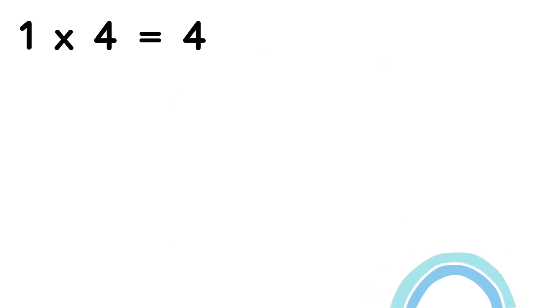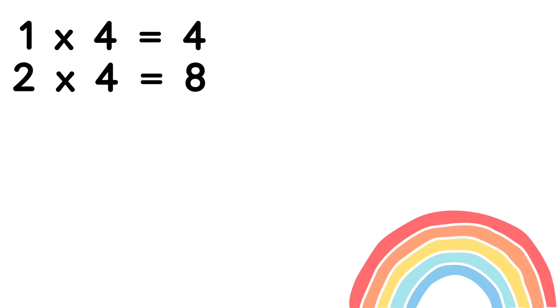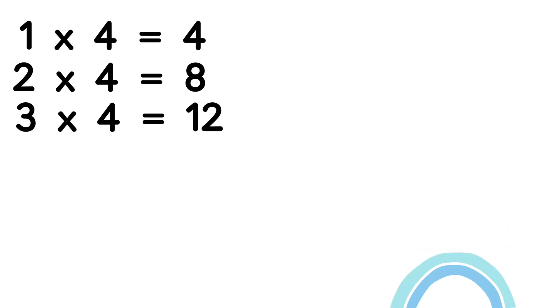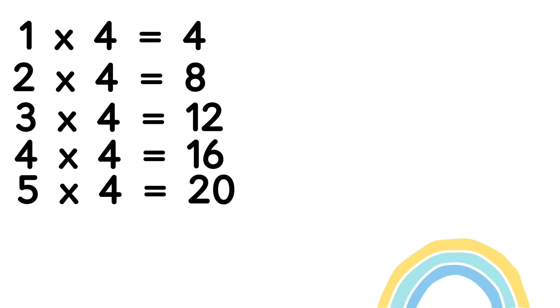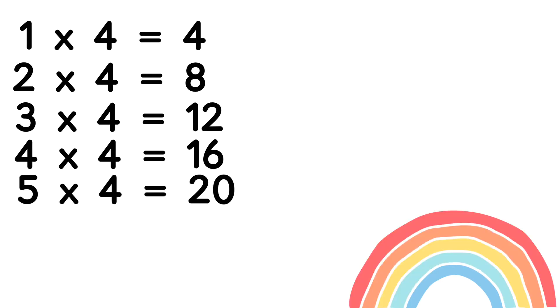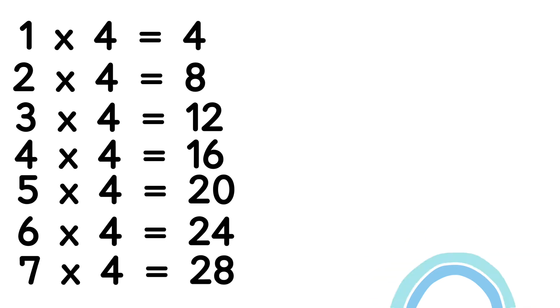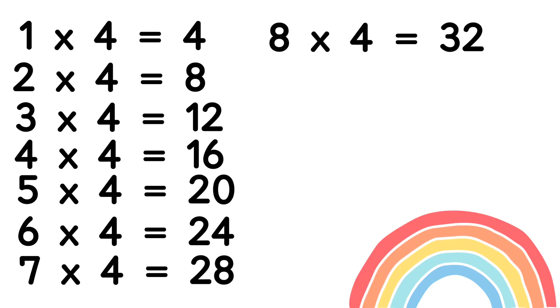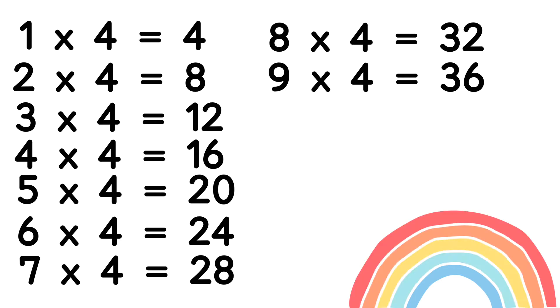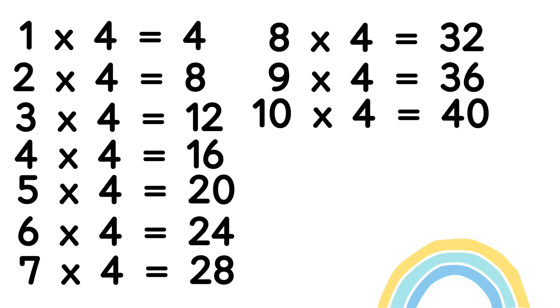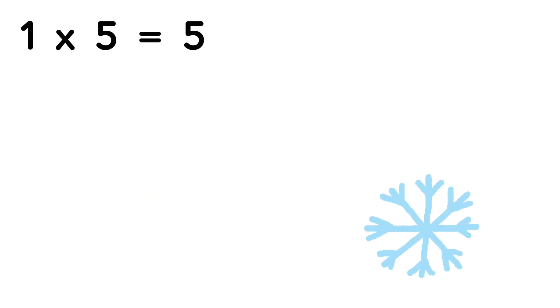Table of 4: 1 four is 4, 2 fours are 8, 3 fours are 12, 4 fours are 16, 5 fours are 20, 6 fours are 24, 7 fours are 28, 8 fours are 32, 9 fours are 36, and 10 fours are 40.